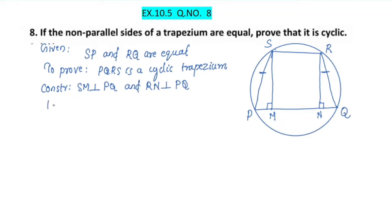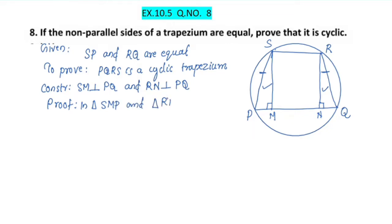This is the proof. I will say that these two triangles are congruent — triangle SMP and triangle RNQ.